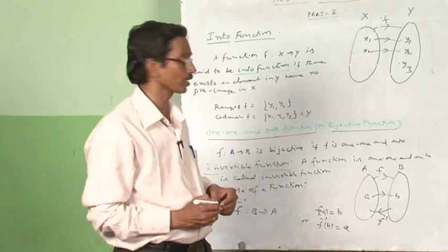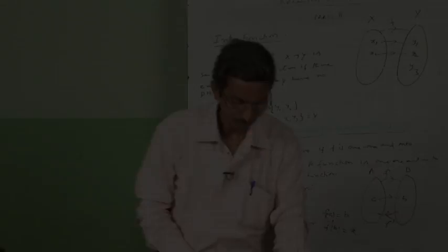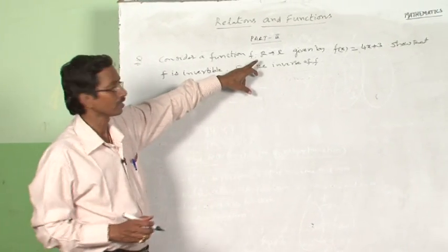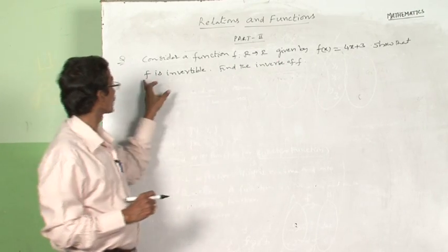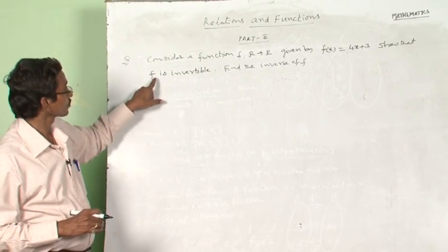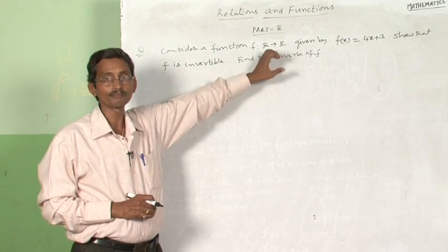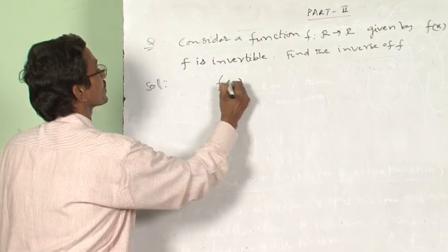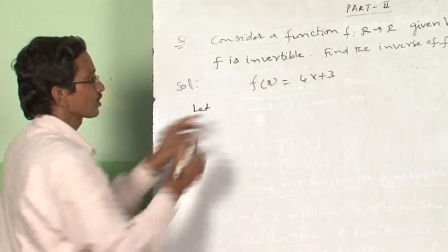I will now solve some problems based on one-one, onto, and invertible functions. Consider a function F mapping from ℝ to ℝ given by F(x) = 4x + 3. Show that F is invertible and find the inverse of F. To show the function is invertible, we first prove it is one-one and onto. The given function is F(x) = 4x + 3. Let x₁, x₂ belong to ℝ.